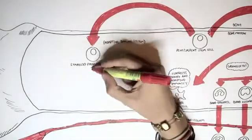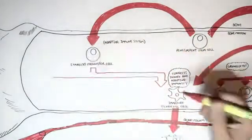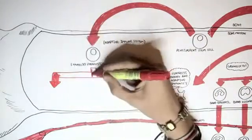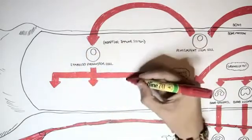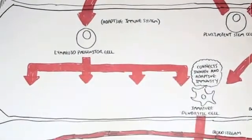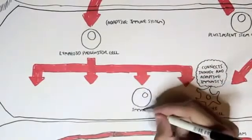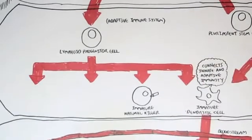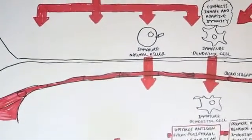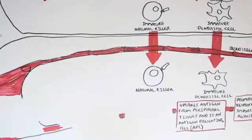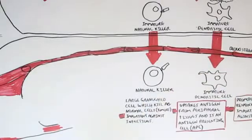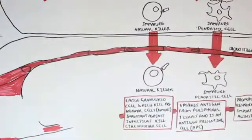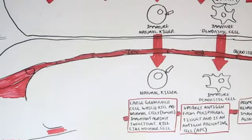Now let's look at the lymphoid progenitor cells, which also came from the pluripotent stem cell. The lymphoid progenitor cell typically gives rise to the adaptive immune cells. First, the lymphoid progenitor cell will give rise to two cells which are not really part of the adaptive immune system: the immature dendritic cell, which is a connection between innate and adaptive immunity, and the immature natural killer cell. When the immature natural killer cell leaves the bone marrow, it becomes a natural killer cell. Natural killer cells are large granulated cells which kill abnormal cells such as tumors, and are important against infections. They are called natural killer cells because they kill cells naturally without the need of other signals from other cells.